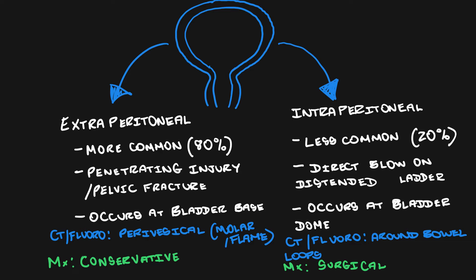The management of both types of rupture is different: conservative management with extraperitoneal rupture using a Foley's catheter, and surgical management for an intraperitoneal rupture.